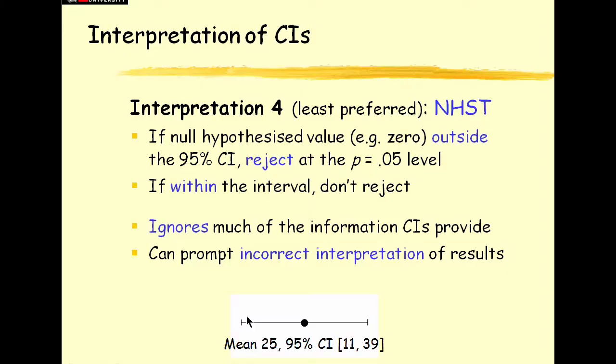Think of this confidence interval, I said, well, values inside the interval are plausible for the true population mean. Suppose you're interested in some value outside, say that was 0 or 50, some special value that your theory postulated might be the true value.